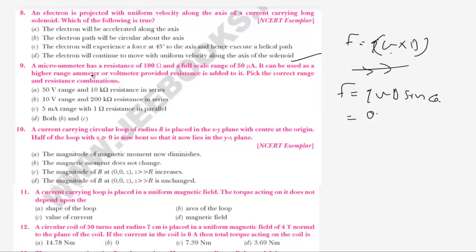Next question. A microammeter has a resistance of 100 ohm and a full scale range of 50 microampere. It can be used as a high range ammeter or voltmeter provided resistance is added to it. Pick the correct range of resistance for the combination. We need to find how much resistance to add and what the voltage will be.